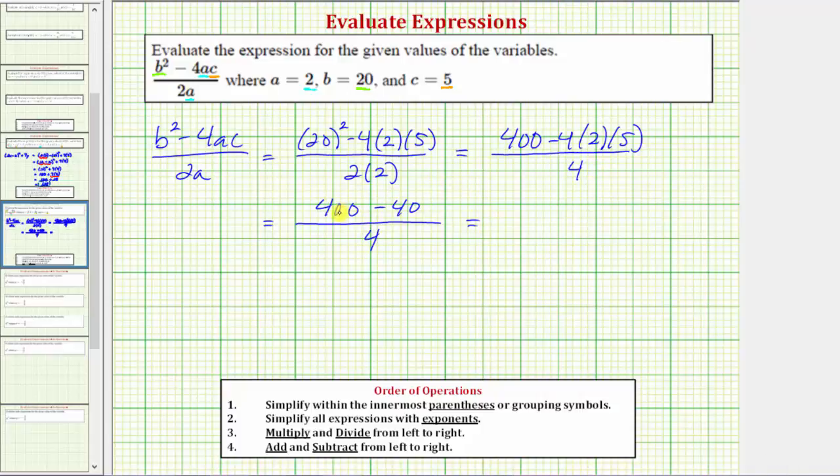And then finally, 400 minus 40 is equal to 360. So we have 360 fourths, or 360 divided by 4, which equals 90.